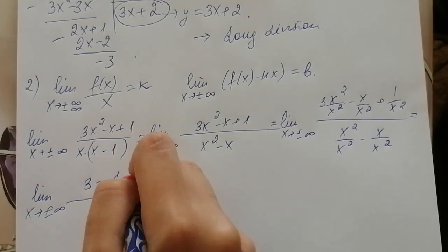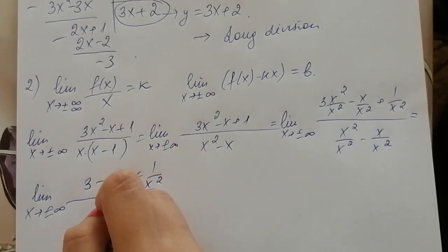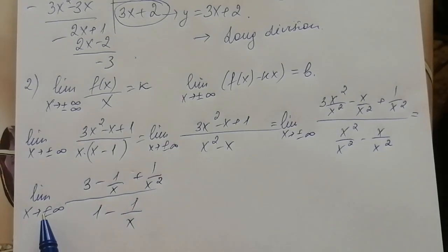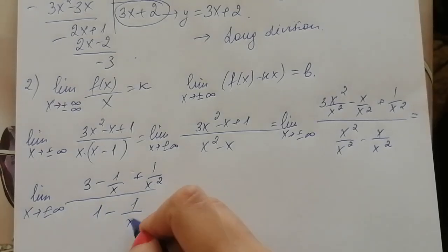3 minus 1 over x plus 1 over x squared, over 1 minus 1 over x. And limit of function 1 over x when x tends to infinity is equal to 0.